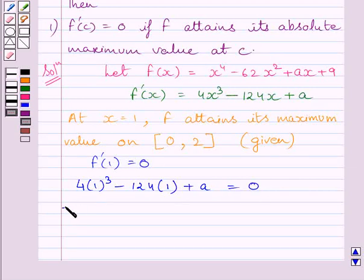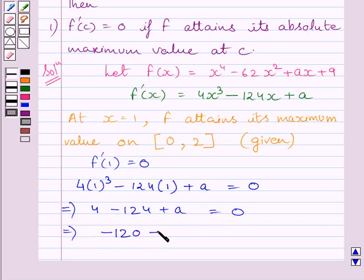On simplifying, we get 4 minus 124 plus a equal to 0. Now we know 4 minus 124 is equal to minus 120. So we get minus 120 plus a equal to 0. Now adding 120 on both sides, we get a is equal to 120.